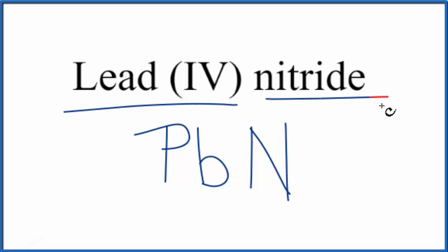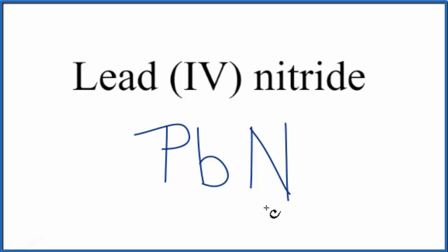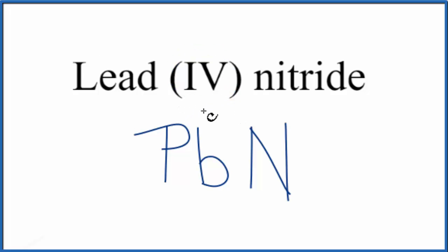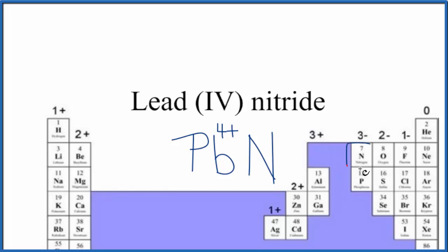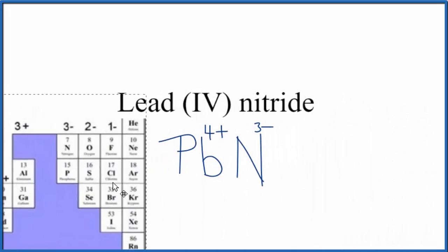We have a metal and a nonmetal, so this is an ionic compound and we need to consider charge. For lead(IV), the Roman numeral 4 tells us the charge is 4+. For nitrogen, looking it up on the periodic table — nitrogen's charge is 3−, just like phosphorus. So now we have the ionic charge for each element.